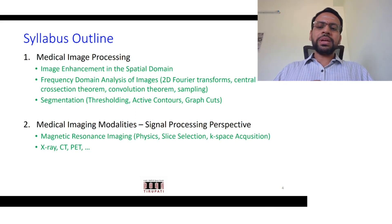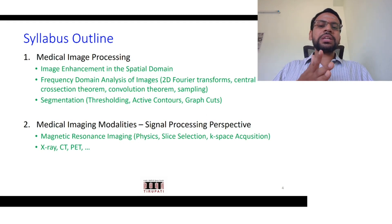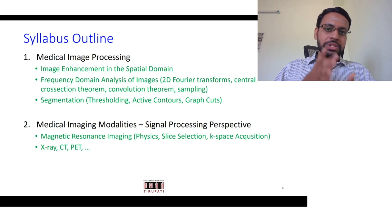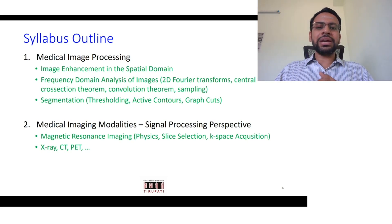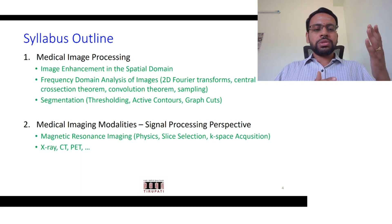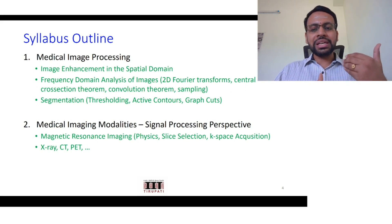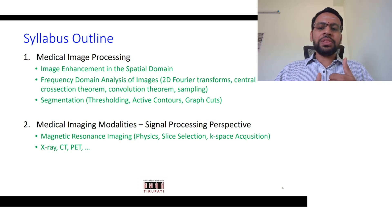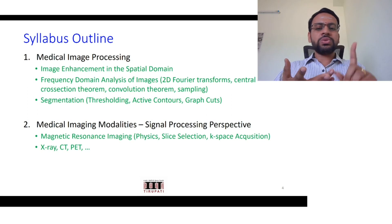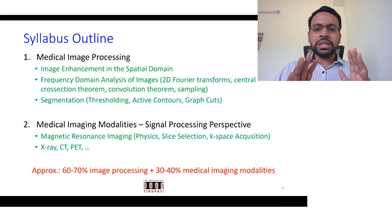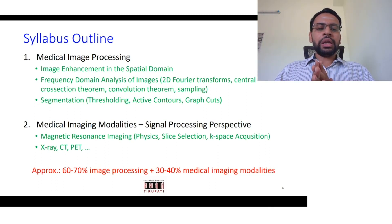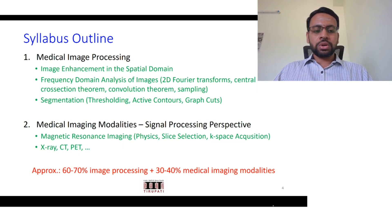Another cluster of topics we would discuss is medical imaging modalities, particularly from a signal processing perspective. We will discuss in detail magnetic resonance imaging (MRI) — its physics and various aspects. In addition to MRI, we will also discuss how you acquire, process, and analyze using other imaging modalities like X-ray, CT, PET scan, and so on. Overall, 60 to 70 percent of this course covers image processing aspects for medical imaging, and 30 to 40 percent focuses on medical imaging modalities.